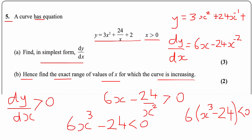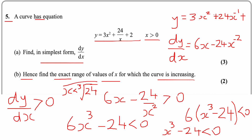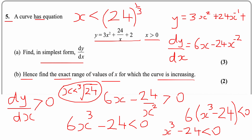Dividing by 6 gives x³ − 24 > 0, so x³ > 24, meaning x > ∛24. Since the question asks for the exact range of values, the curve is increasing when x > 24^(1/3), i.e. x greater than the cube root of 24.